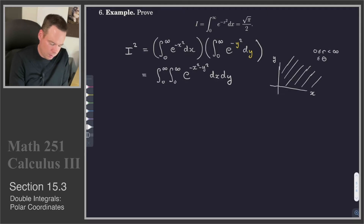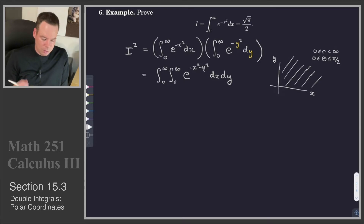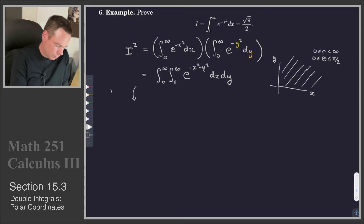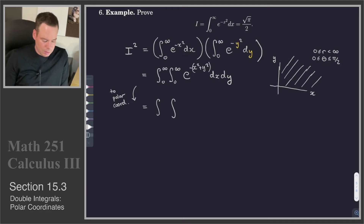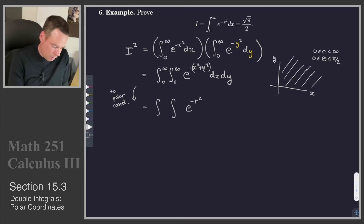So if I switch to polar coordinates, this region — instead of being 0 to infinity for both x and y — has r going from 0 to infinity, but theta is trapped between two finite values. That's nice for the limits of integration. As for the integrand itself, I've got e to the negative x squared minus y squared. I'll switch the minus to a plus and put parentheses around the whole thing, because x squared plus y squared is r squared. So this becomes e to the negative r squared, and dx dy becomes r dr d theta. I get that extra r out front for the change to polar coordinates.